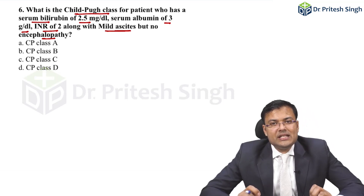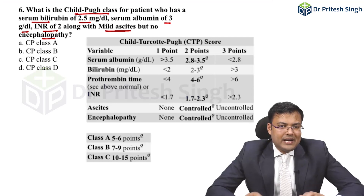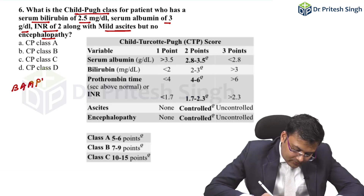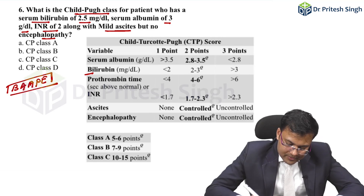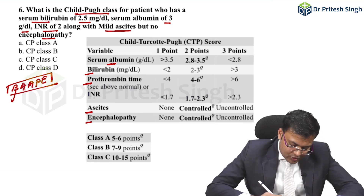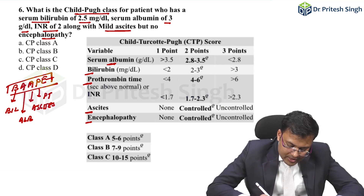Have a look at the CTP scoring. There are 5 parameters included. To remember them, the mnemonic is BAPE: Bilirubin, Albumin, Ascites, Prothrombin time (PT/INR), and Encephalopathy.